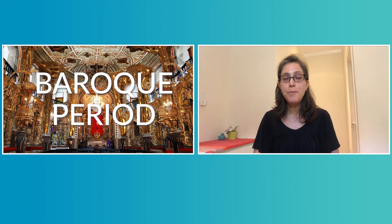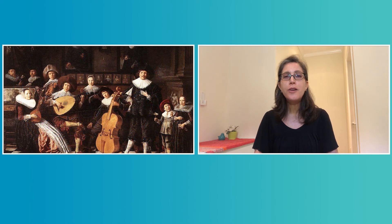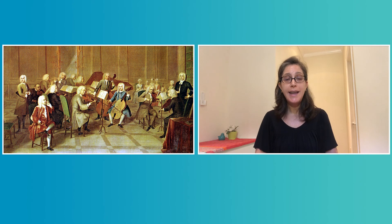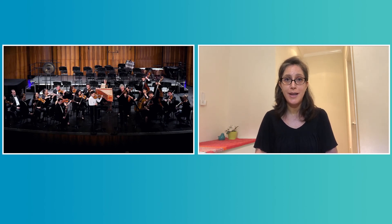Do you remember we learned about the baroque period and I explained to you that there were different periods in classical music? One of the things that changed a lot from one period to the next is the size of the orchestra and the different instruments playing in the orchestra. In the baroque period an orchestra could have included fifteen to thirty musicians. We listened to an example with Bach's concerto for two violins.